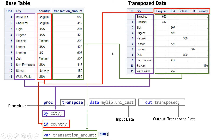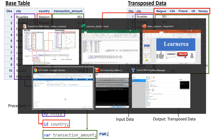One important note before using PROC TRANSPOSE: it is very important that your data should be sorted based on the BY column - the column you do not want changed - and also sorted on the country column. It is always a good habit to first sort the data based on the BY column and the column you want to transpose, and then use PROC TRANSPOSE.